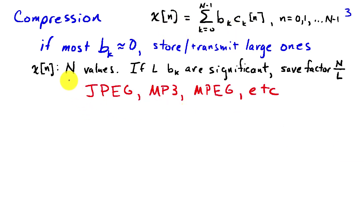So if x of n has capital N values and only capital L of the bk are significant, then by saving the bk's instead of the x of n, we reduce our storage requirements by a factor of capital N divided by L. If N is a thousand and L is 10, we've reduced our storage requirement by a factor of 100.